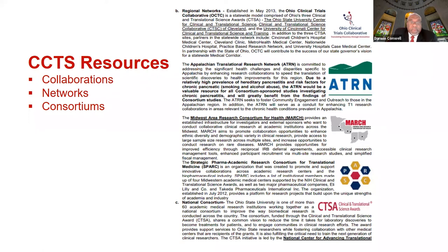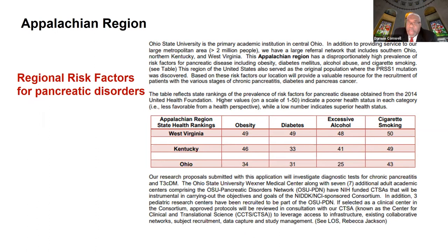The Appalachian region — Ohio, Kentucky, and West Virginia — provides a strong patient base for pancreatitis research given high rates of obesity, diabetes, excessive alcohol use, and cigarette smoking. This was leveraged to make a strong case for entry into the consortium. A strong letter of support from Dr. Jackson was also included in the application — she is well-known at the NIH and has one of the largest NIH grants ever funded there.